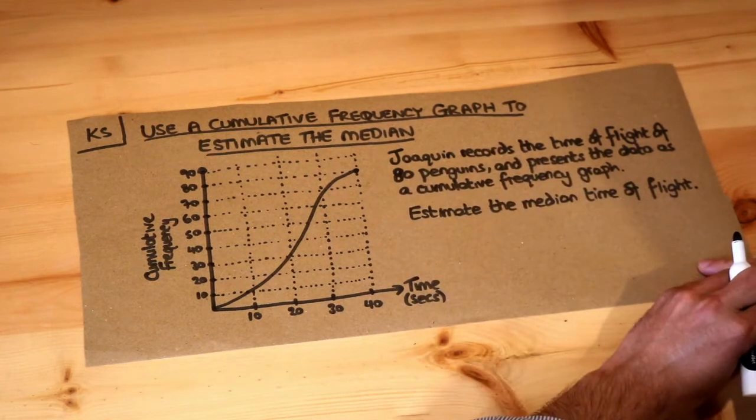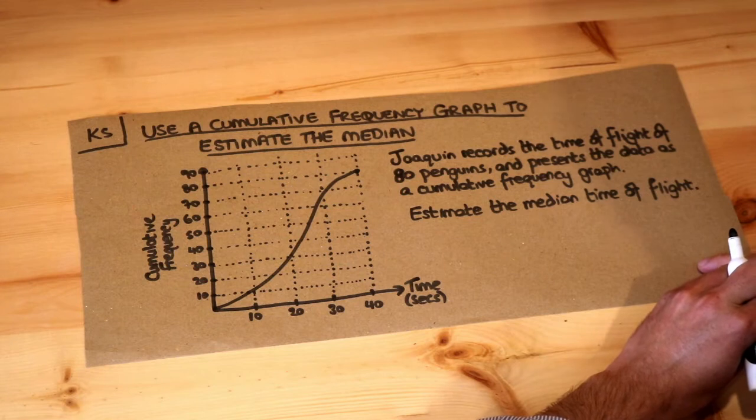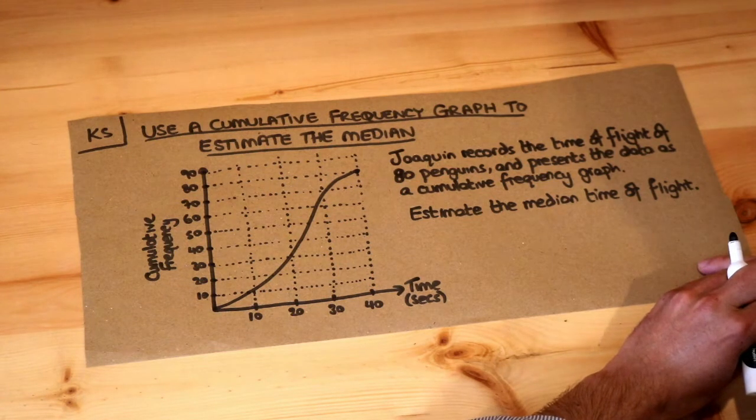So Joaquin records the time of flight of 80 penguins and presents the data as a cumulative frequency graph. Estimate the median time of flight.